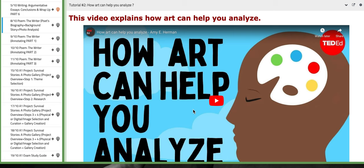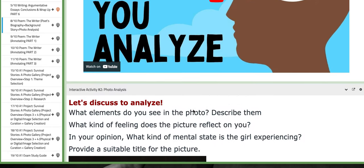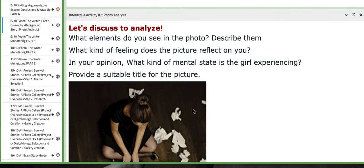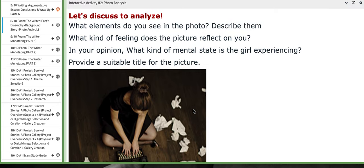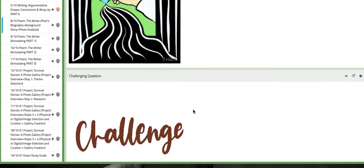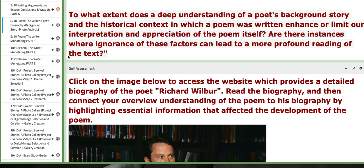Here you have tutorial number two. It explains how or it aids you to analyze specifically things that are visual, artistic minds I would say. As for activity number two, you are going to analyze the photo associated with the poem. There are specific questions that you need to ask yourself while analyzing the photo. And that's pretty it for this day.